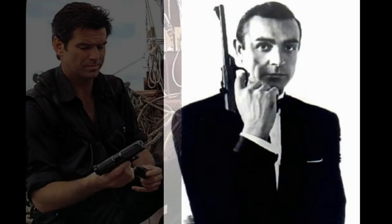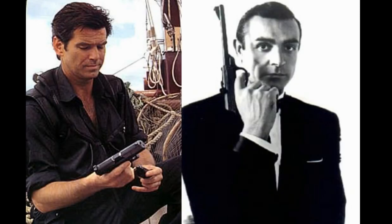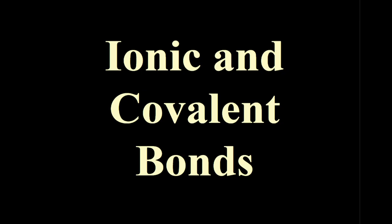All right, today we're going to start learning about bonding. The first thing we're going to do is separate ionic bonds from covalent bonds. So our two types of bonds that we're going to introduce today are ionic and covalent bonds.